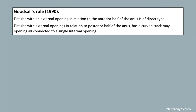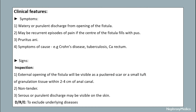Goodsall's rule states that fistulas with an external opening in relation to the anterior half of the anus are of direct type, while fistulas with external openings in relation to the posterior half of the anus have a curved tract which may connect to a single internal opening.